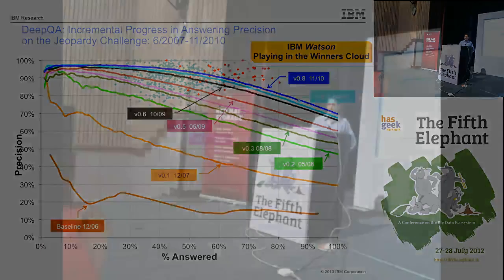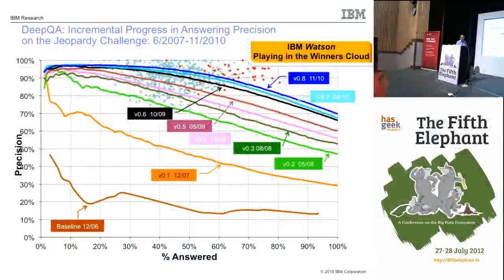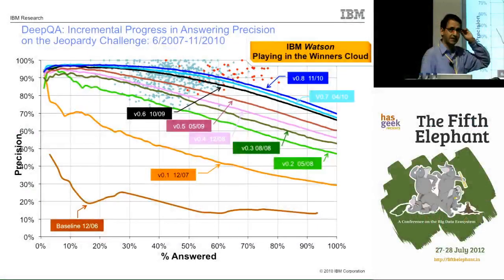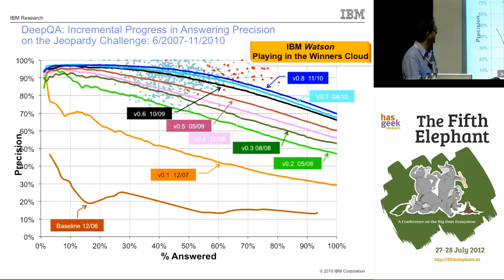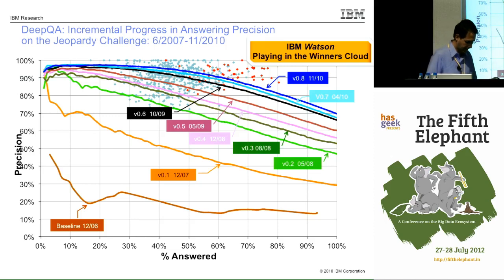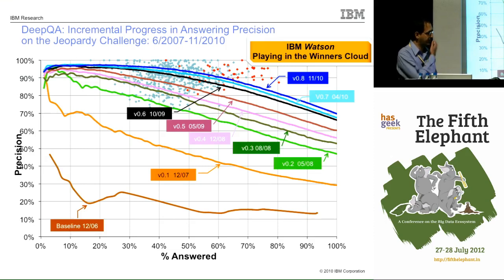A progress chart shows performance as a function of time. Starting from the bottom brown curve when the project began, successive curves show progress over time with date labels. By November 2010 the system was in the same region as the red grand-champion dots, with at least some red dots below the blue line. Throughout this period, various things were tried, error analysis was conducted, and somewhat general improvements were identified to capture the next fraction of correct answers.